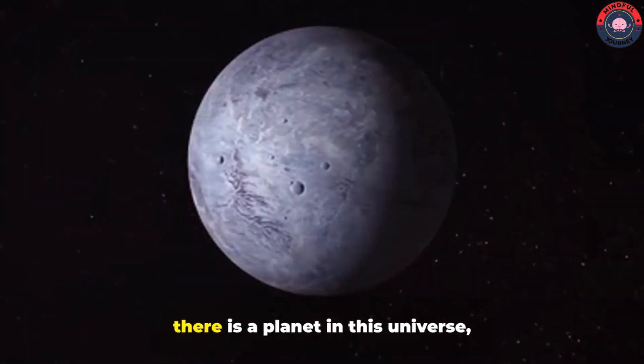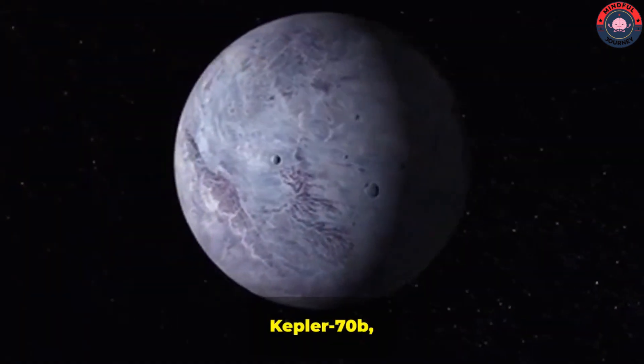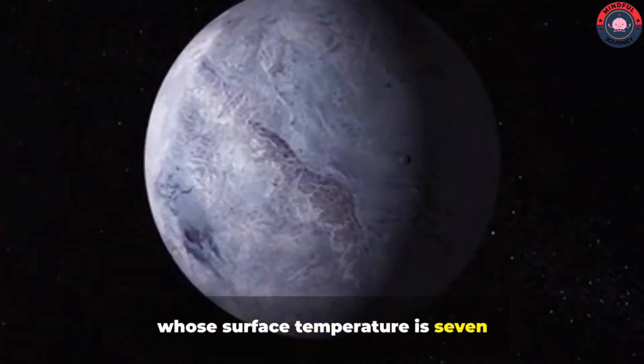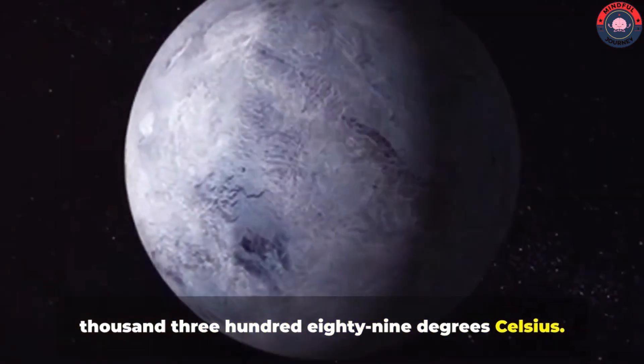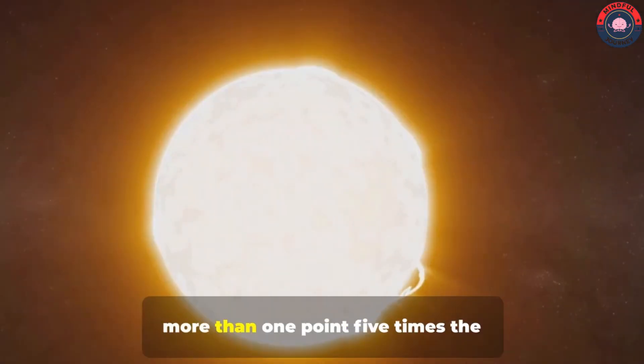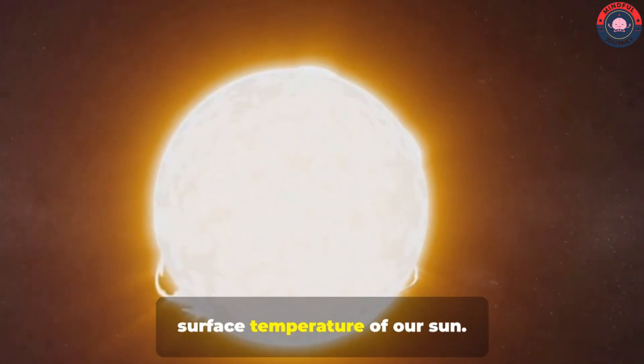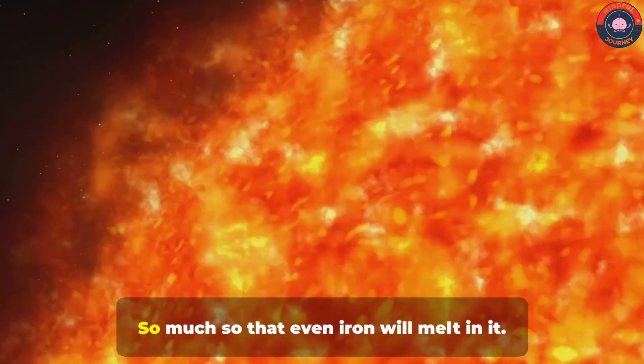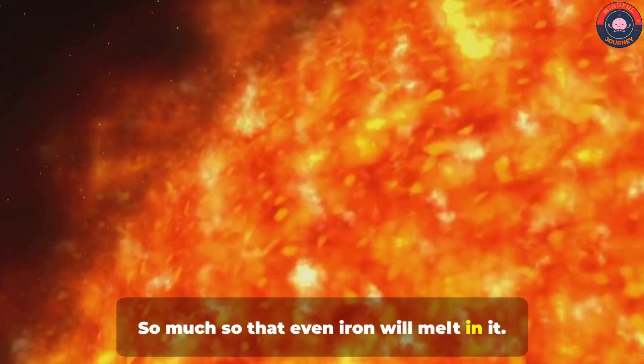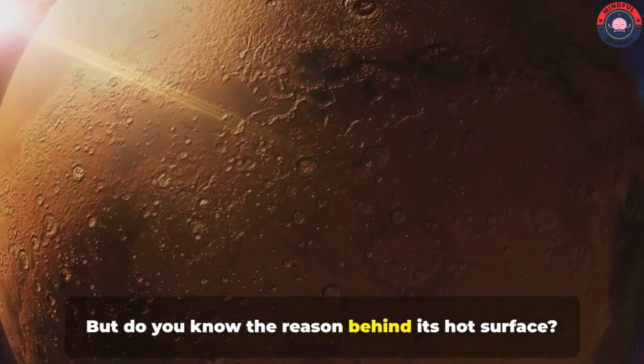I mean to enter a star and then come back to life. Well, there is a planet in this universe, Kepler-70b, whose surface temperature is 7389 degrees Celsius, that is, more than 1.5 times the surface temperature of our sun. So much so that even iron will melt in it.